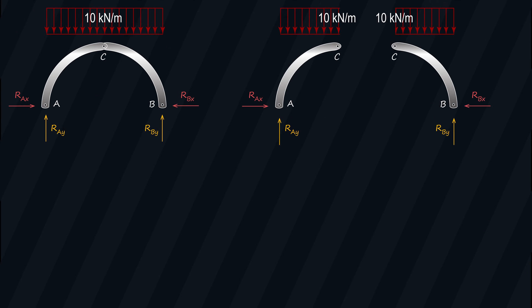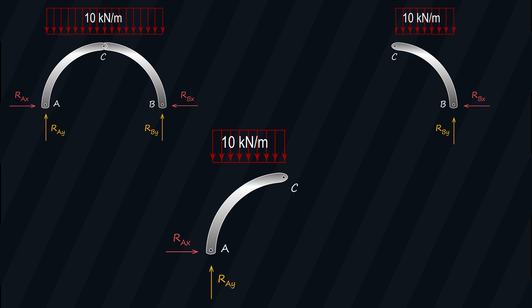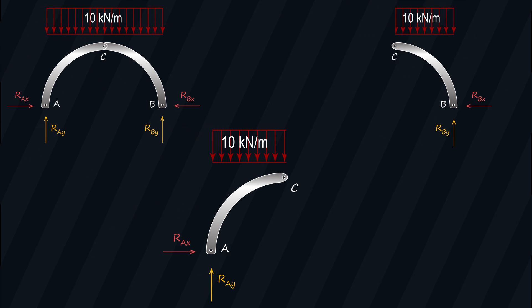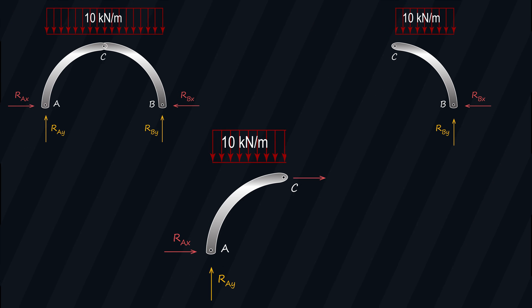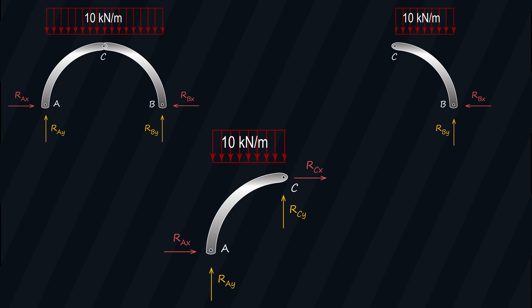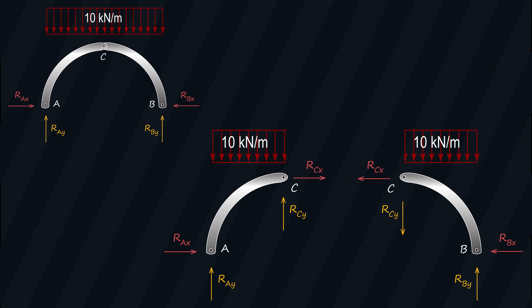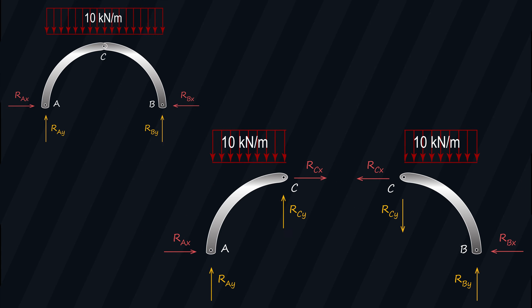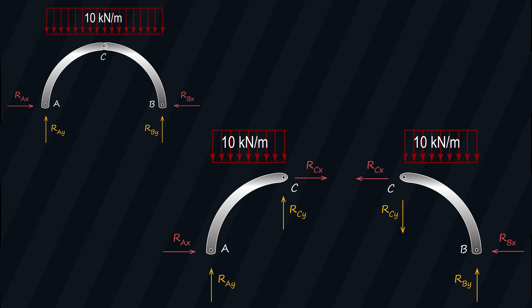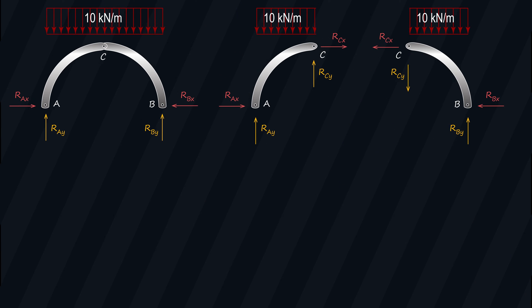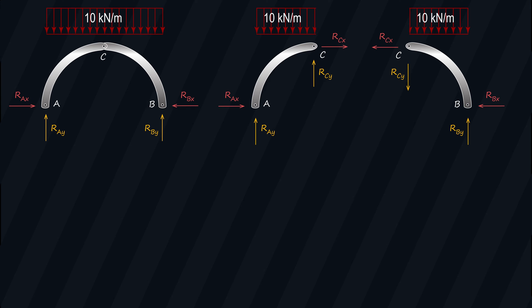We also have the free body diagram for each member of this structure. For member AC, we have this diagram. At point C, which is an internal hinge, we have RCX and RCY. Note that RCX and RCY can also be found in member BC, but with the opposite direction as assumed in member AC, following Newton's third law of motion. These are the free body diagrams we need to fully analyze this 3-Hinge Arc.